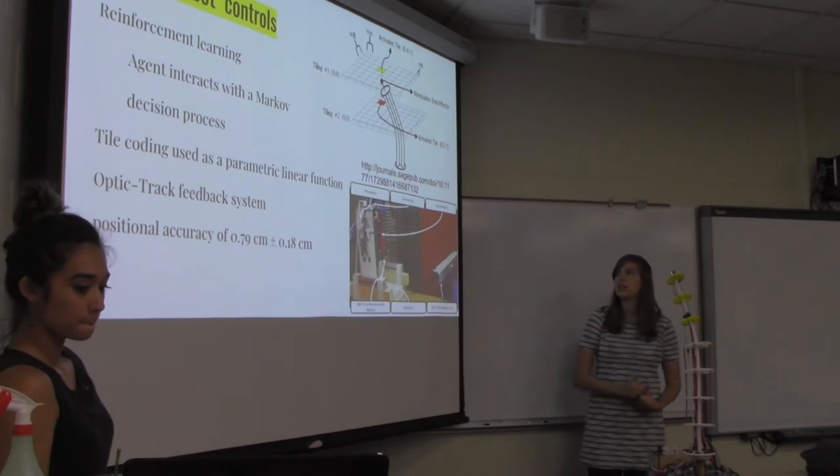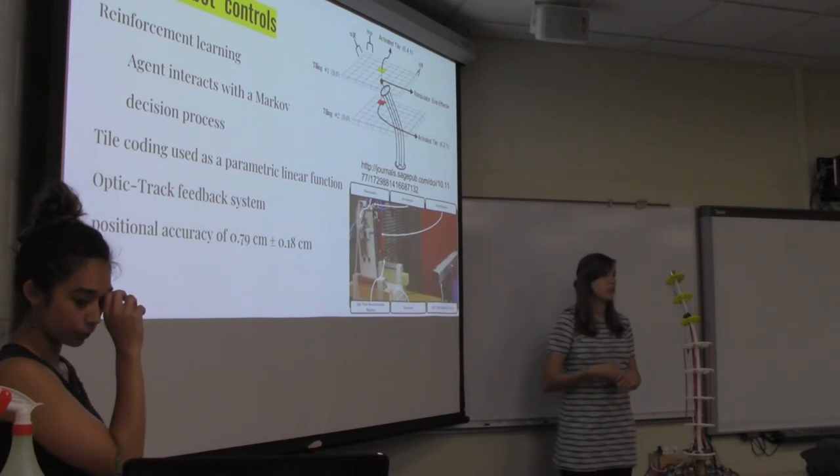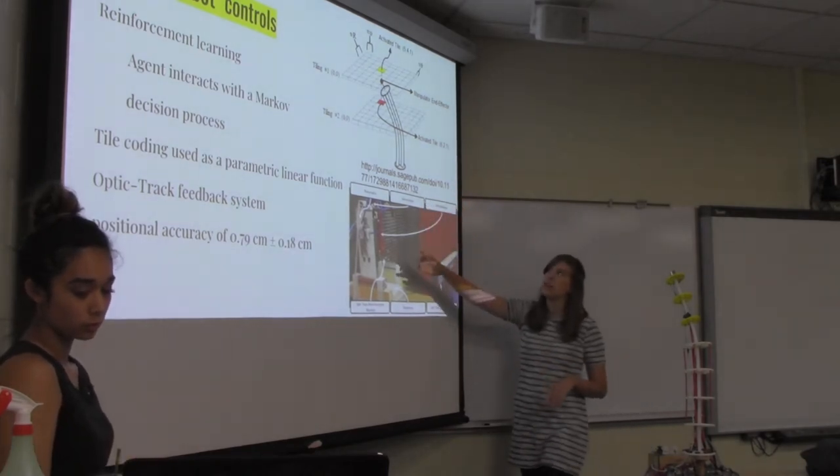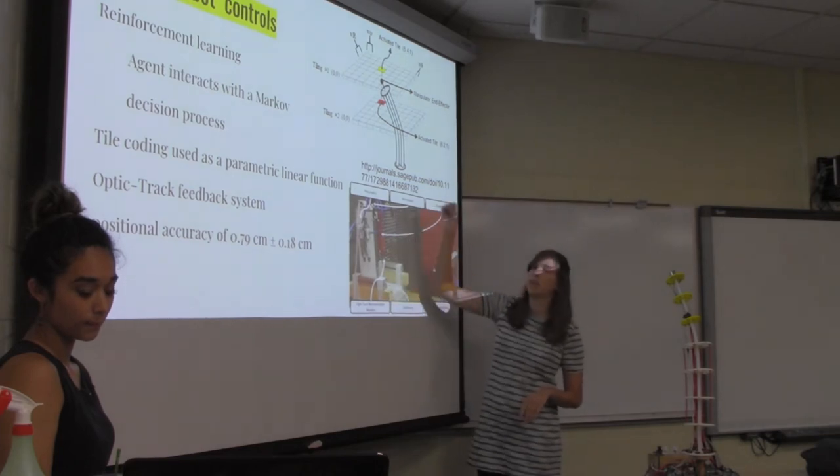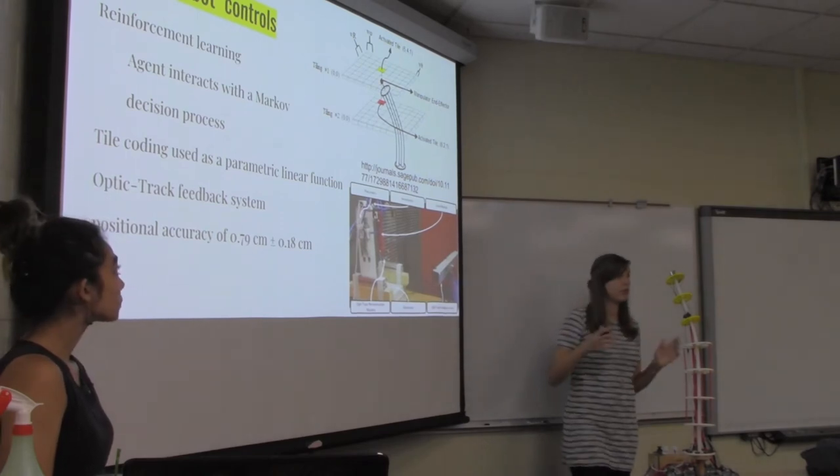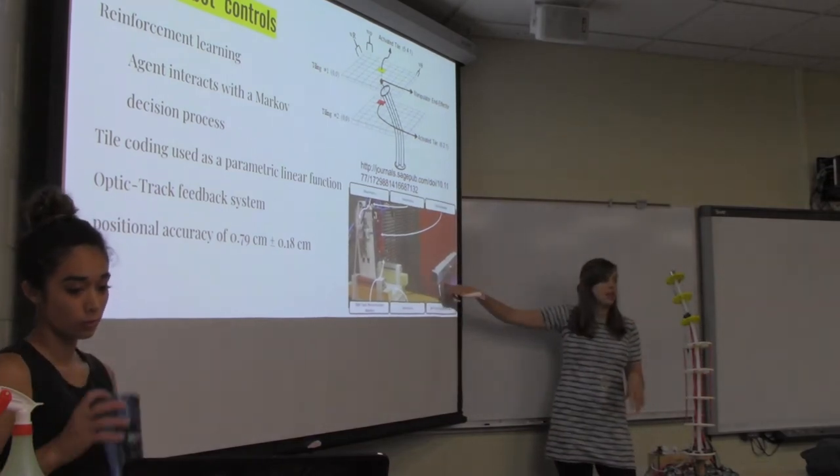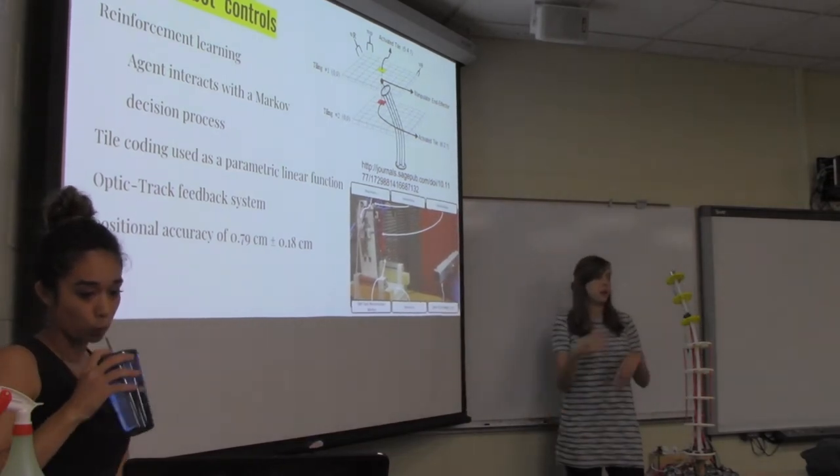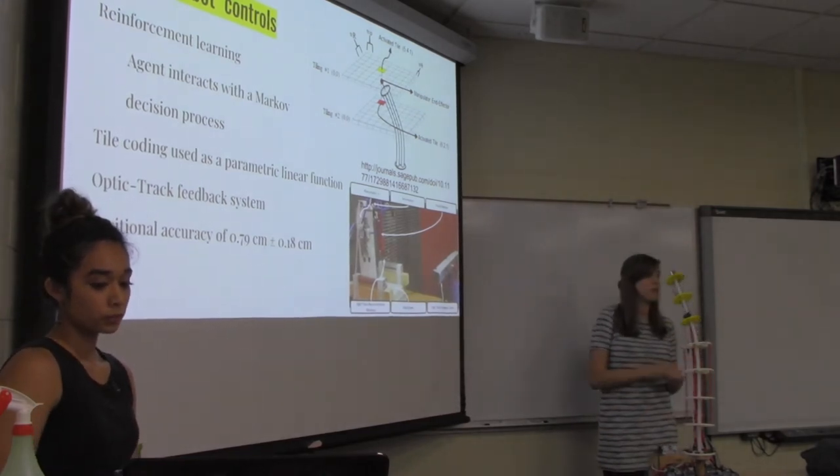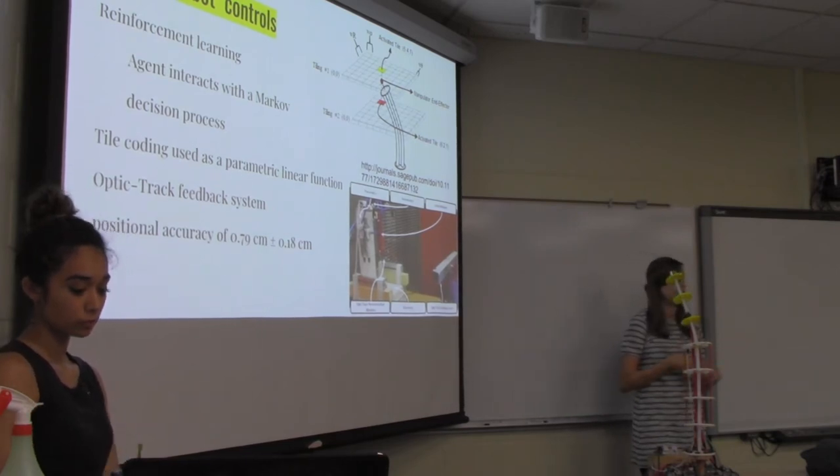This is their setup of their experiment to see how well their design worked. They have tendons and pneumatics located in their robots, and they wanted to see how well it got into the different curves and areas. For their control scheme, they used reinforcement learning. Their agent interacted with their Markov decision process. The robot got rewards the closer it got to different tiles. As there was a sphere around each tile and as it got closer, the amount of reward for the robot got higher. It was reliant though on a vision track system so that they could tell where they were at in their system. After their testing, they noticed that the positional accuracy for about 12 points of motion was 0.79 centimeters, give or take about 0.18 centimeters.